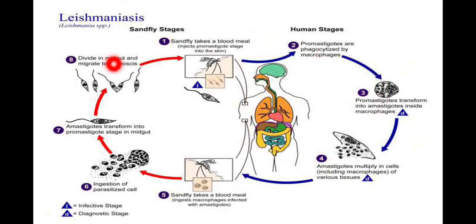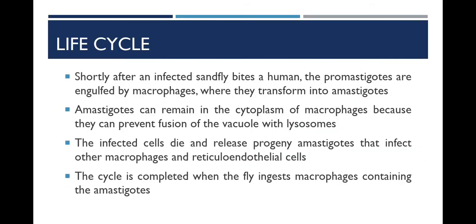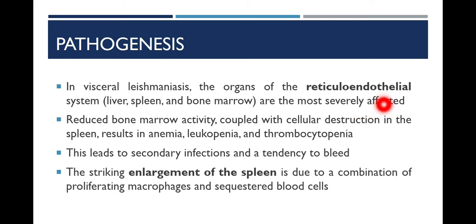The cycle of Leishmania donovani is completed in two hosts: the human being and the sand fly. In visceral leishmaniasis, the organs of the reticuloendothelial system — liver, spleen, and bone marrow — are the most severely affected. The reticuloendothelial system is composed of macrophages or phagocytic cells present in these organs.